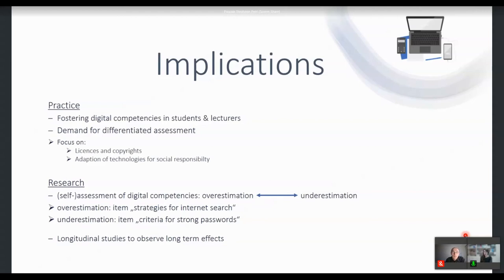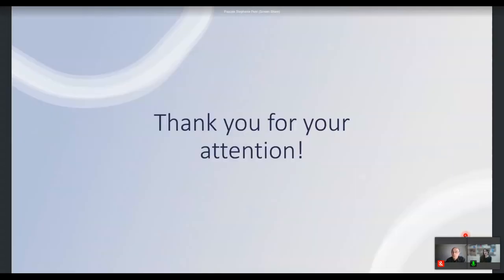Renee's data show that one possible starting point for intervention could be licenses and copyrights, and further the point of adapting technologies to take on social responsibility. In future research, we would like to compare self-assessed digital competencies versus knowledge-based assessments, and look at over- and underestimation at the item level — for example, students tend to overestimate their skills in internet search strategy and underestimate their skills regarding criteria for strong passwords. On a broader level, we would like to conduct more longitudinal studies, evaluate skill-building interventions, and ultimately examine what digital competencies are needed for labor market entry.